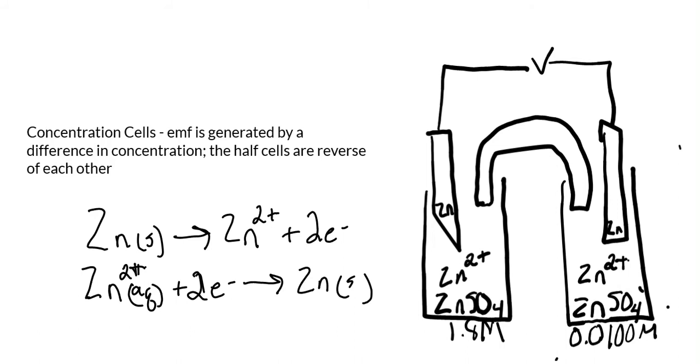What you need to know is that the dilute is going to be the anode - that's where our oxidation is going to occur - and then the concentrated one will of course be the cathode where reduction is occurring.